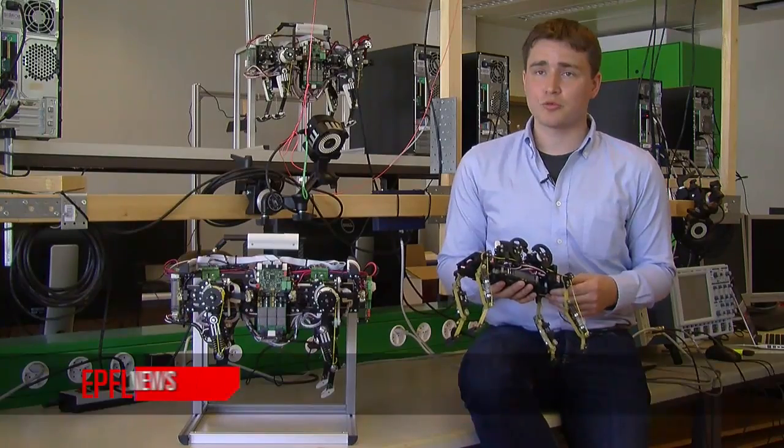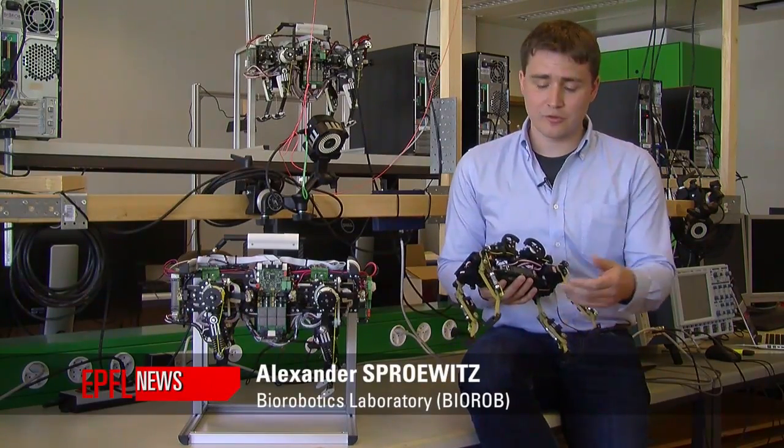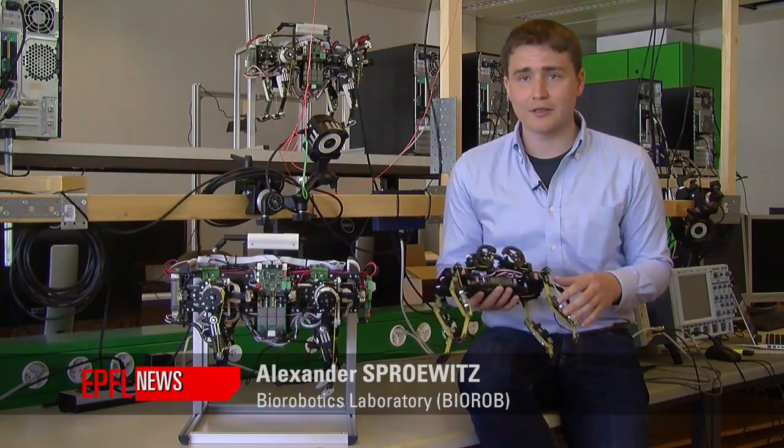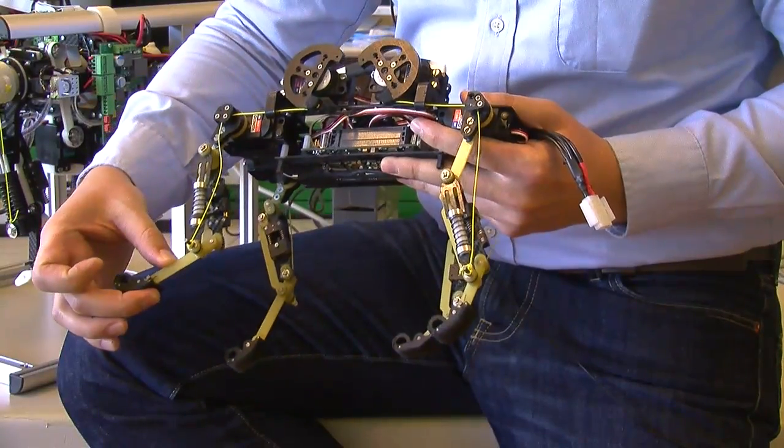In this case, we mimicked a lot of the morphology of a house cat. So we used a segmented leg design for both the front and the hind leg. We're using springs as a replacement for tendons.